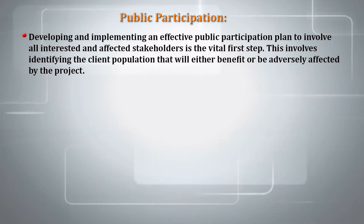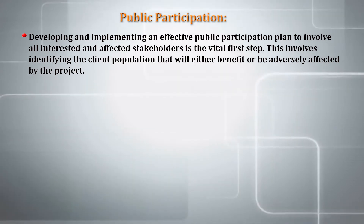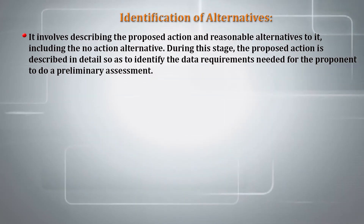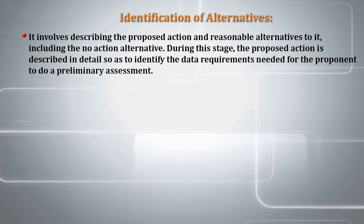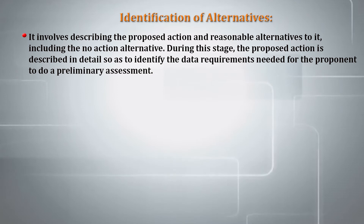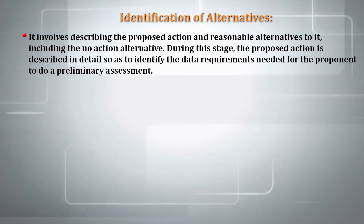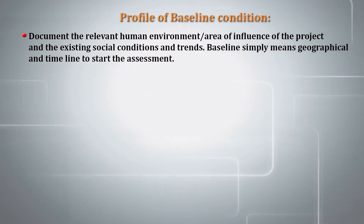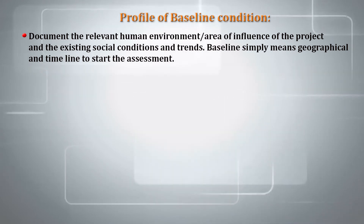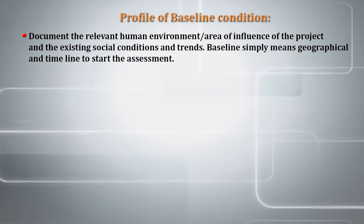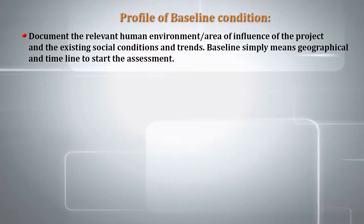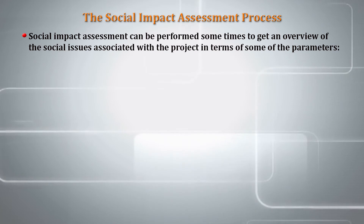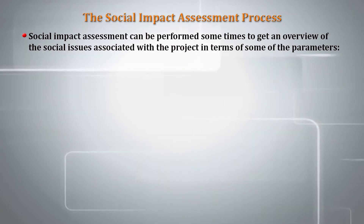Public participation involves identifying the client population that will benefit or be adversely affected by the project. The second stage is identification of alternatives — describing the proposed action and reasonable alternatives, including the no action alternative. During this stage, the proposed action should be described in detail to identify data requirements for a preliminary assessment. The third stage is profiling baseline conditions — documenting the relevant human environment, area of influence of the project, and existing social conditions and trends. Baseline simply means the geographical and timeline starting point for the assessment.